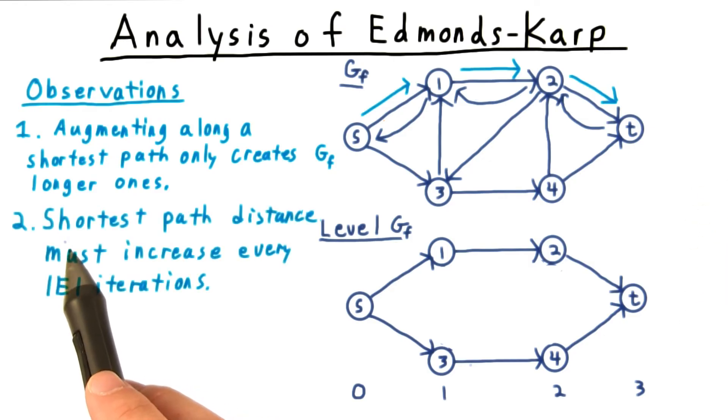Next, we observe that the shortest path distance must increase every E iterations. Every time that we use an augmenting path, we delete an edge from the level graph, the edge that got saturated.